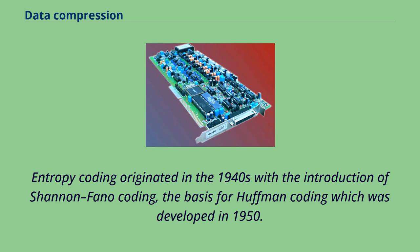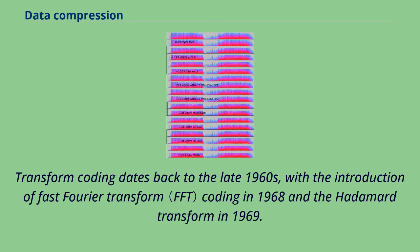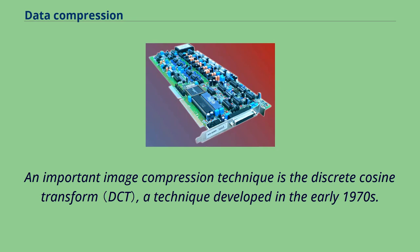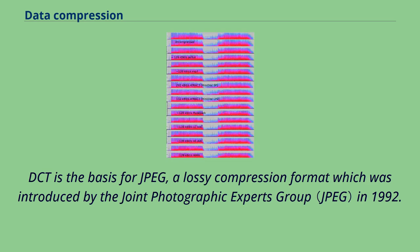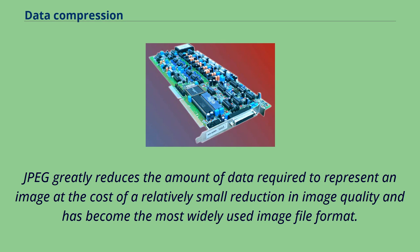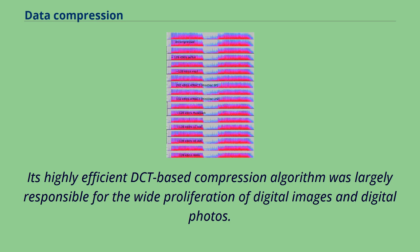Entropy coding originated in the 1940s with the introduction of Shannon-Fano coding, the basis for Huffman coding which was developed in 1950. Transform coding dates back to the late 1960s, with the introduction of fast Fourier transform coding in 1968 and the Hadamard transform in 1969. An important image compression technique is the discrete cosine transform, a technique developed in the early 1970s. DCT is the basis for JPEG, a lossy compression format which was introduced by the Joint Photographic Experts Group in 1992.